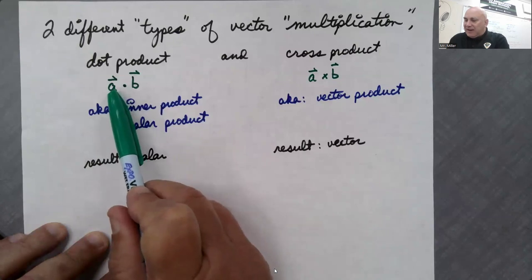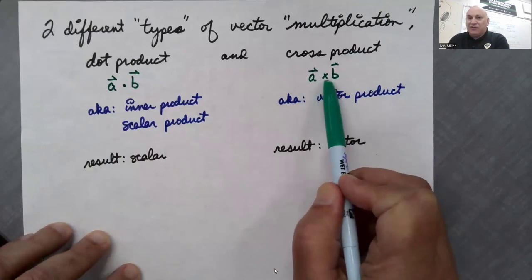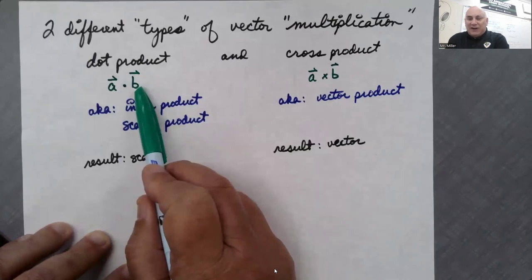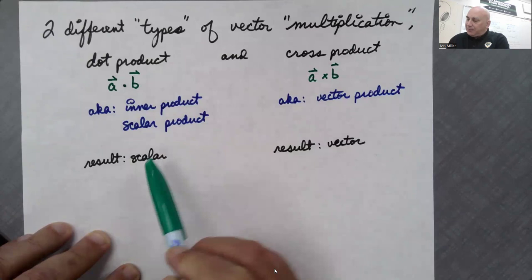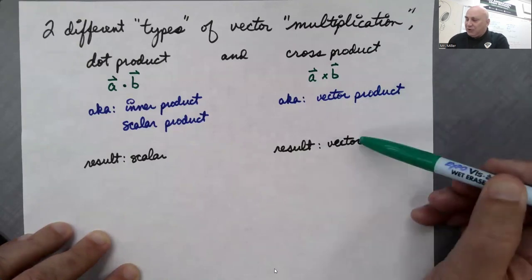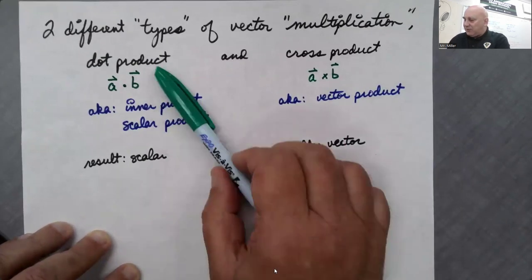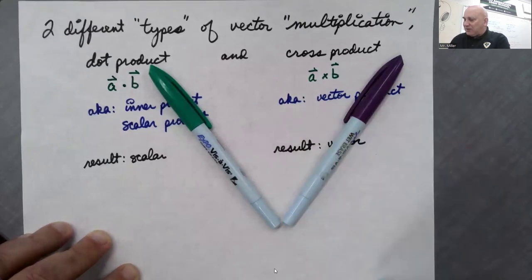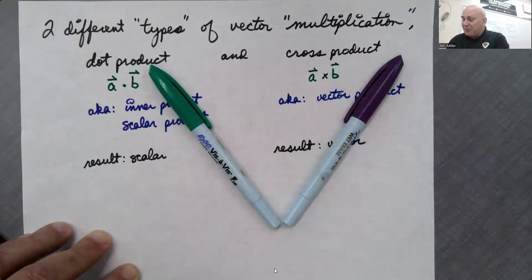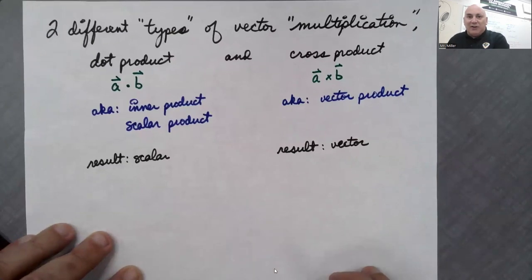There are two types of vector multiplication. One is called the dot product, also known as the inner product or the scalar product. When we do the dot product, we read it as A dot B to differentiate it from A cross B. When you dot two vectors, you get a scalar — a number. When you cross two vectors — the cross product is sometimes known as the vector product — you get a third vector that's perpendicular to both. So if vectors A and B are on the paper, the cross product would be vector C sticking up out of the paper or going down through it, perpendicular to both. This cross product is not covered in our textbook, but we will cover it in class.